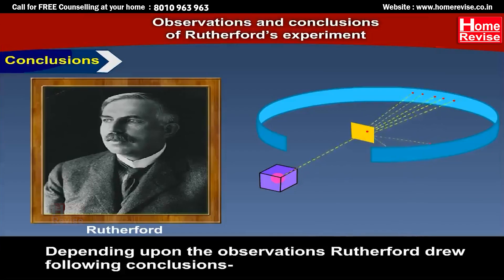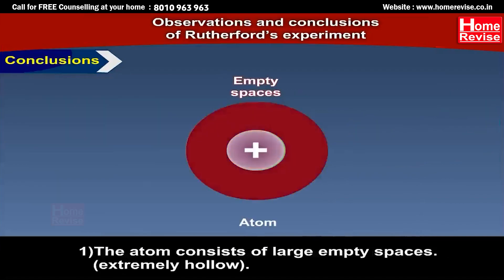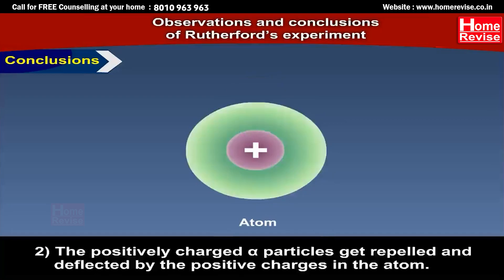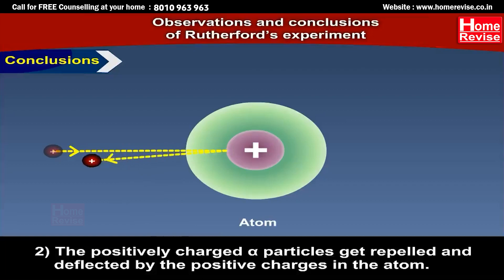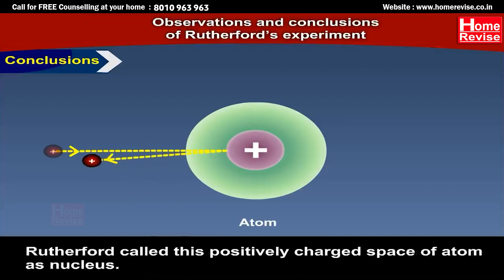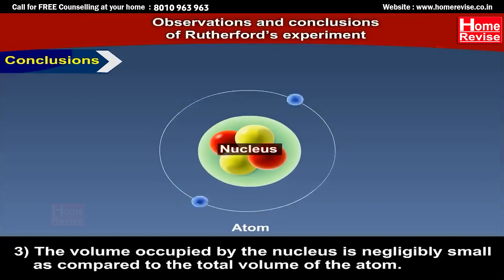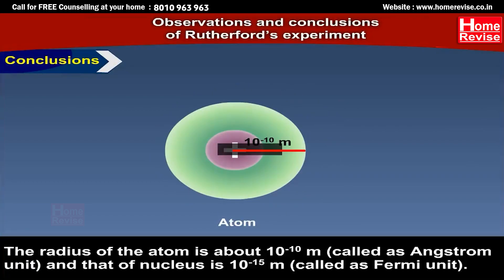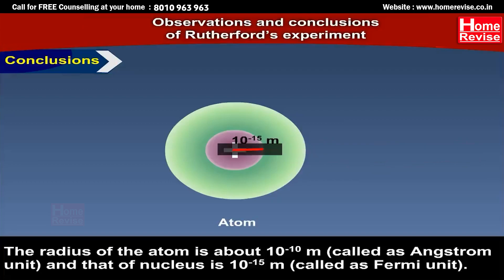Depending upon the observations, Rutherford drew the following conclusions. First, the atom consists of large empty spaces — that is, they are extremely hollow. Second, the positively charged alpha particles get repelled and deflected by the positive charges in the atom. Third, the volume occupied by the nucleus is negligibly small as compared to the total volume of the atom. The radius of the atom is about 10⁻¹⁰ meters, called the angstrom unit, and that of the nucleus is 10⁻¹⁵ meters, called the fermi unit.